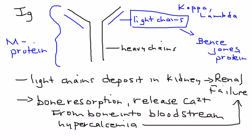Keep in mind that these free light chains by themselves can be found in both the blood and the urine, and they are given the special name Bence-Jones protein.